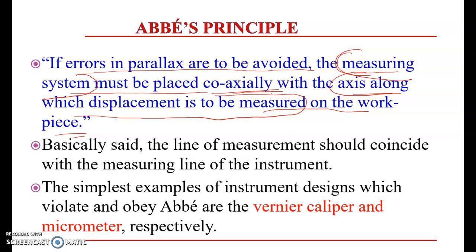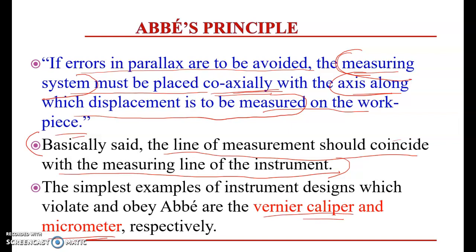The quantity we are measuring must be coaxially aligned with the measuring system. The simplified definition of Abbe's principle is: the line of measurement should coincide with the measuring line of the instrument. A vernier caliper is considered an instrument which violates Abbe's principle, whereas a micrometer obeys it — which is why a micrometer gives a more accurate reading compared to a vernier caliper.